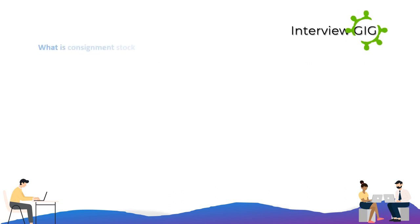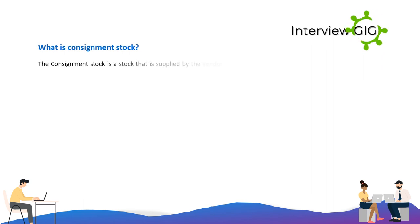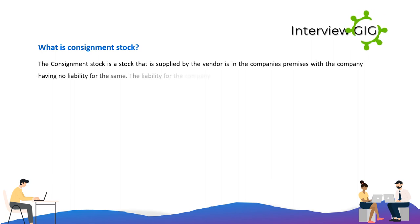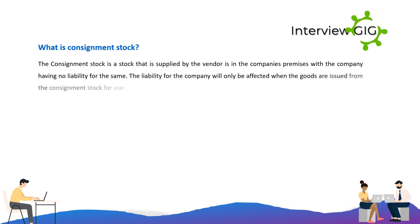What is consignment stock? The consignment stock is a stock that is supplied by the vendor and is on the company's premises, with the company having no liability for the same. The liability for the company will only be affected when the goods are issued from the consignment stock for use.